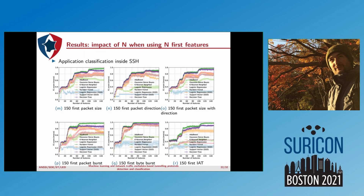Finally, we address application classification. I will only present SSH because it exhibits the worst results among all tunnels. Random Forest is very good; Decision Tree is not as good as before but still decent. Packet direction is not so good. Packet burst requires as many features as byte burst but achieves worse performance. Here you need around 120 features to get good results, so in the remaining of the paper we use 150 features.